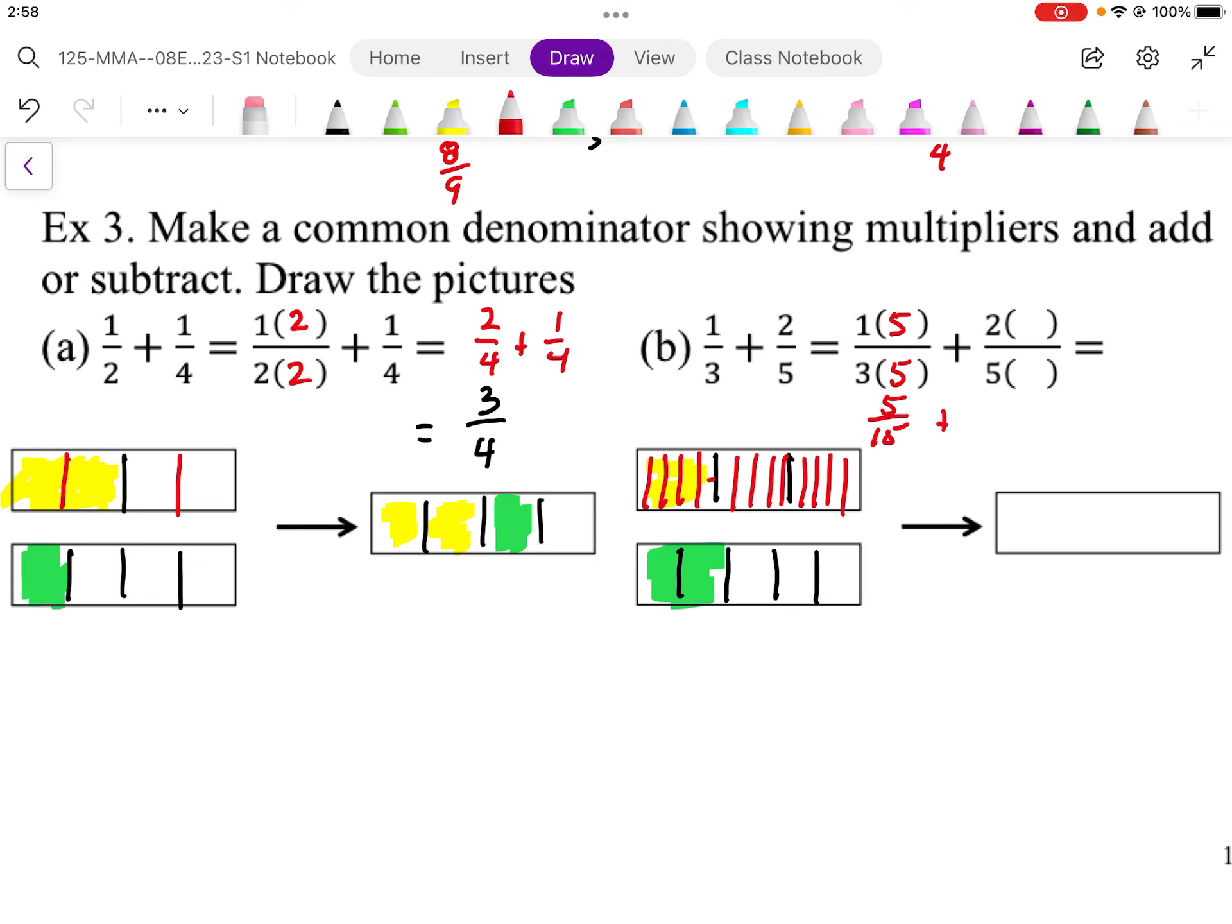And then for the fifths, I'm going to multiply by 3 to get the 15. And I have to do the same to the top. And this is going to give me 6 out of 15. So if I do this by 3, I'm now going to have the same size pieces. I can now add together.